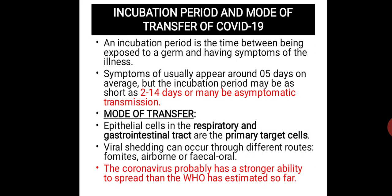The incubation period is the time between exposure to a germ and appearance of symptoms. Symptoms of COVID-19 usually appear about five days on average, but the incubation period may range from two to fourteen days, and some people remain asymptomatic. Viral shedding can occur through different routes: fomites, airborne, or fecal routes.